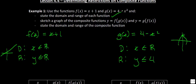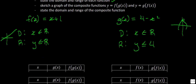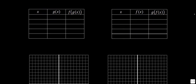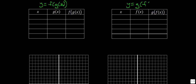Next we need to sketch a graph of the composite functions y equals f of g of x and y equals g of f of x. I've set up a table of values with input values x, then g of x, and then we take that value of g of x as the input into f. The first composite we'll look at is y equals f of g of x, and on the other side y equals g of f of x. I'll use input values from negative 2 to positive 2.